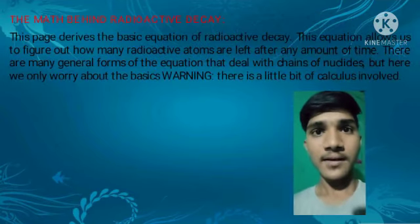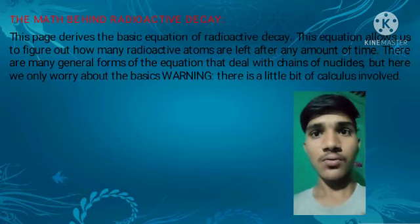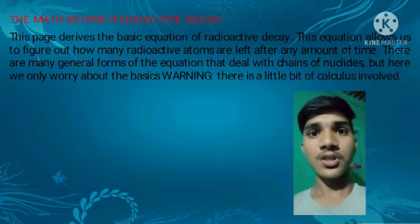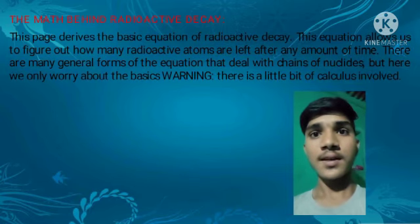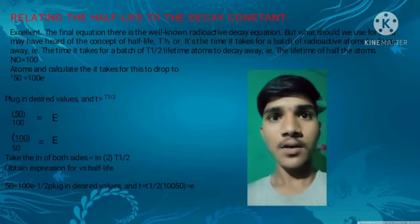The math behind radioactive decay: This section derives the basic equation of radioactive decay. The equation allows us to figure out how many radioactive atoms are left after any amount of time. There are many general forms of the equations that deal with chains of nuclides, but here we only worry about the basic one. There is a little bit of calculus involved.